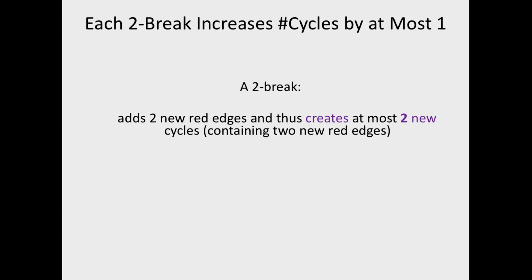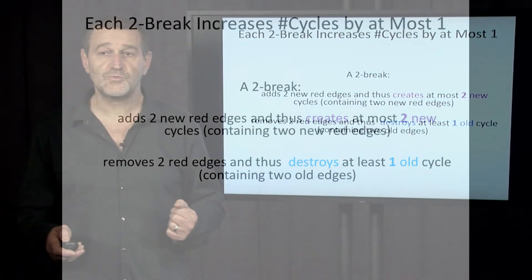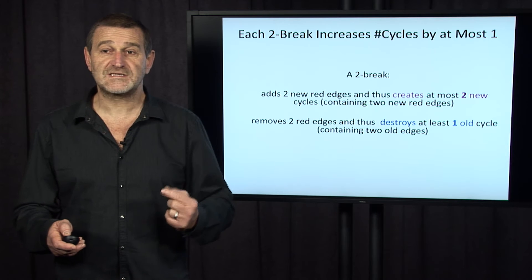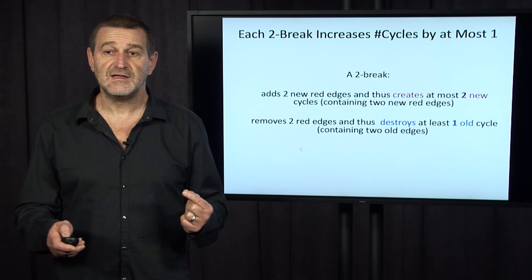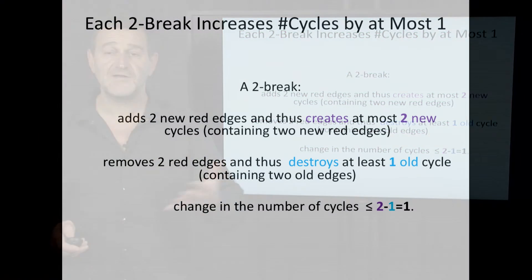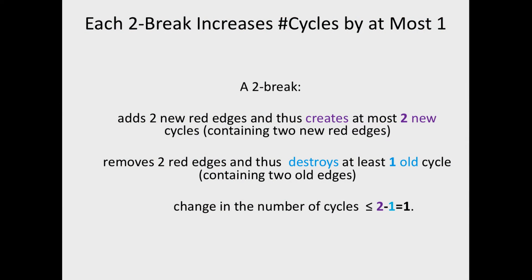So a two-break adds two new red edges and thus creates at most two new cycles in the breakpoint graph. On the other hand, it removes two red edges and thus destroys at least one old cycle in the breakpoint graph. And therefore, the change in the number of cycles is at most two minus one, which is at most one.